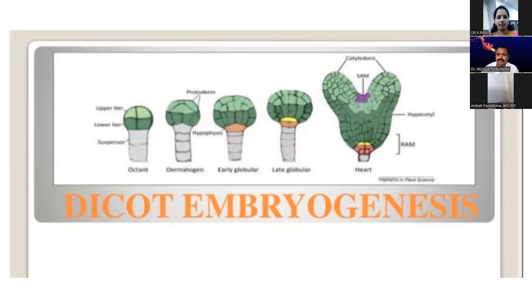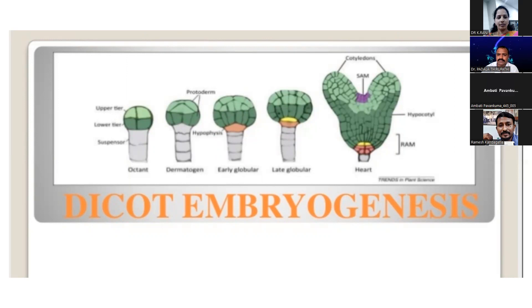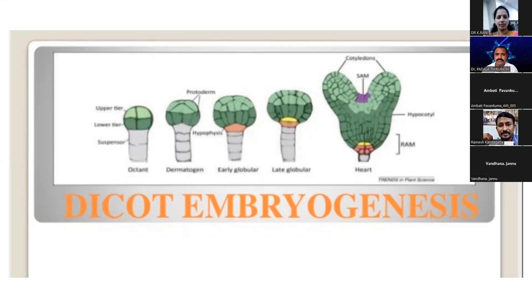What are stamens also known as? Options: pollen, anthus, sporophyll, or microsporophyll. The stamens are also known as microsporophylls. You might think it is also known as anthus, but the correct answer is that stamens are known as microsporophylls.